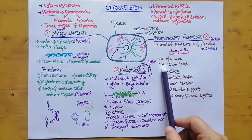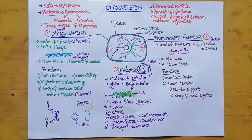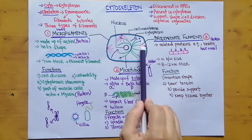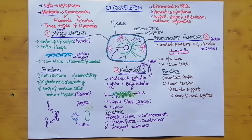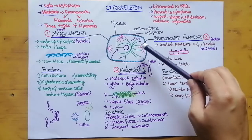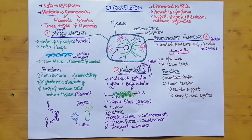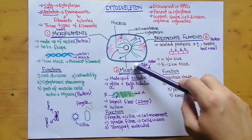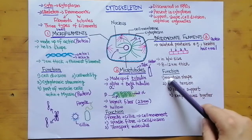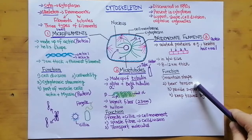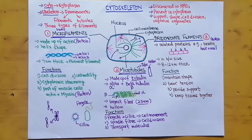The diameter of intermediate filaments ranges from 8 to 12 nanometers. In terms of function, they are very important for maintaining cell shape. They spread inside the cytoplasm, covering more area, and just like roots in plants that bind soil particles together, intermediate filaments keep the shape of the cell together. They also provide tensile strength — if external pressure is applied on the cell, they bear that pressure.